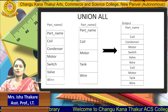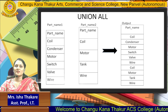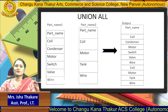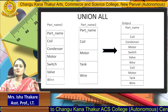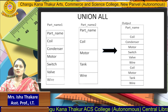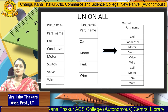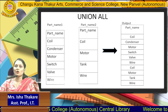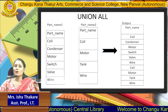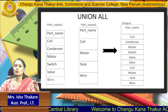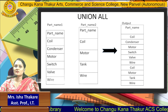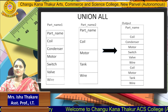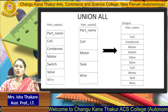Here we can see the output. Wire is used in both tables, and Motor is also used in both tables, making them redundant. The output is: Coil, Condenser, Motor, Switch, Veil, Wire, Coil, Motor, Tank, Wire. Motor and Wire are redundant and appear twice — that is what the Union All operator does.